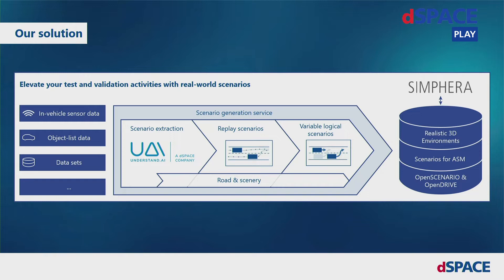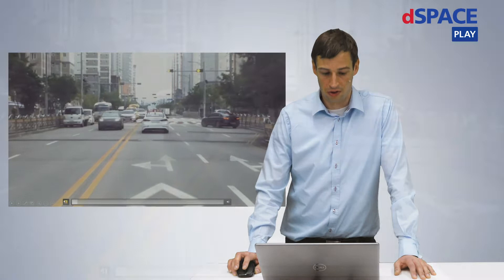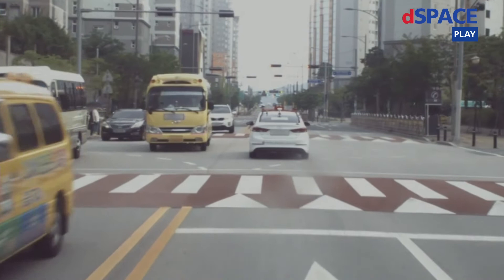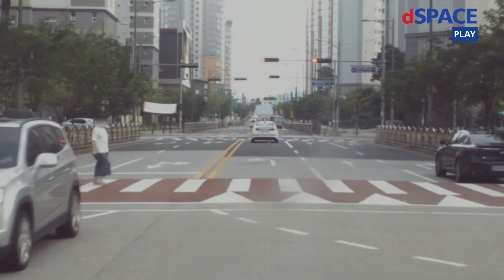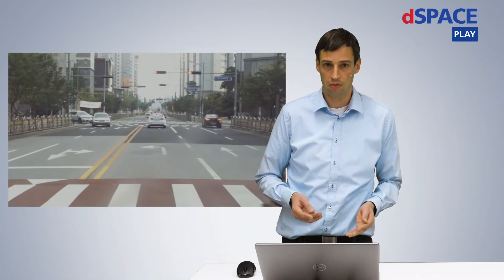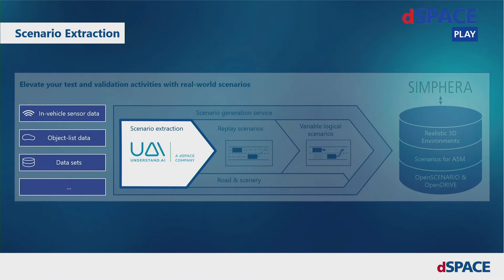We can process different types of measurement data like sensor raw data, object lists, or even available data sets, and generate ready-to-use simulation scenarios for SimFera and OpenScenario. Let me take you on a round trip through our scenario generation service by using this complex, crowded, urban scenario as an example — a highly challenging situation for an autonomous driving function, but even also for an ADAS function like AEB, with many different vehicles moving in different directions and pedestrians being relevant actors.